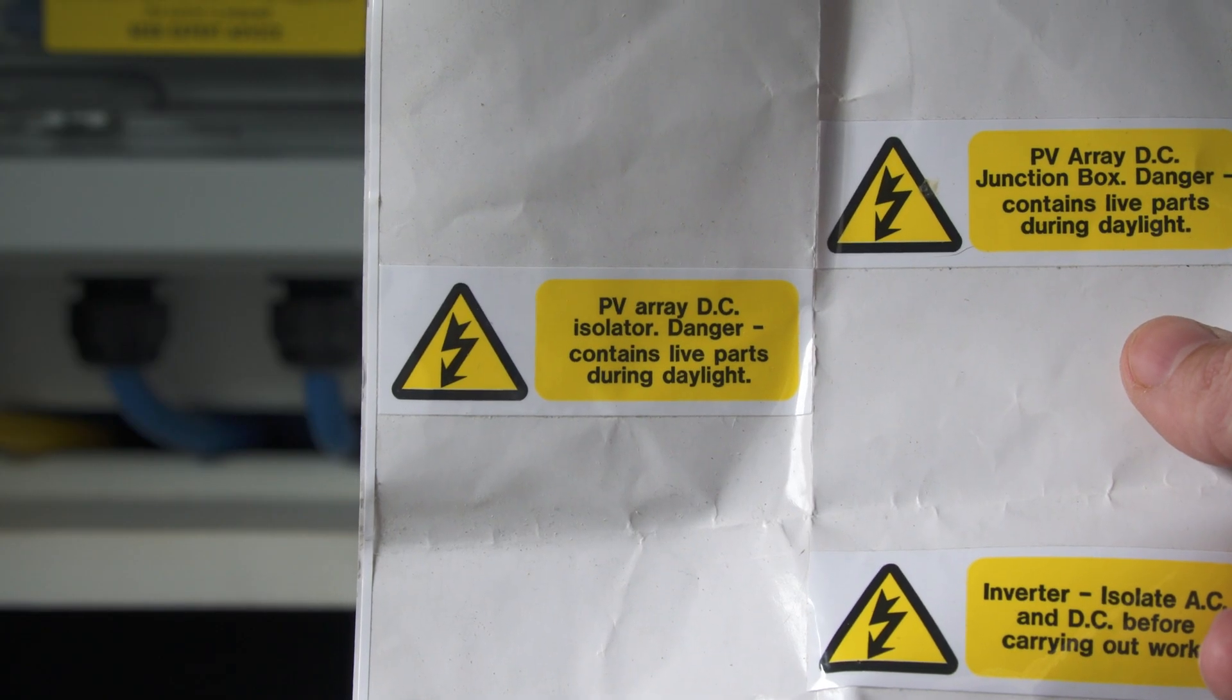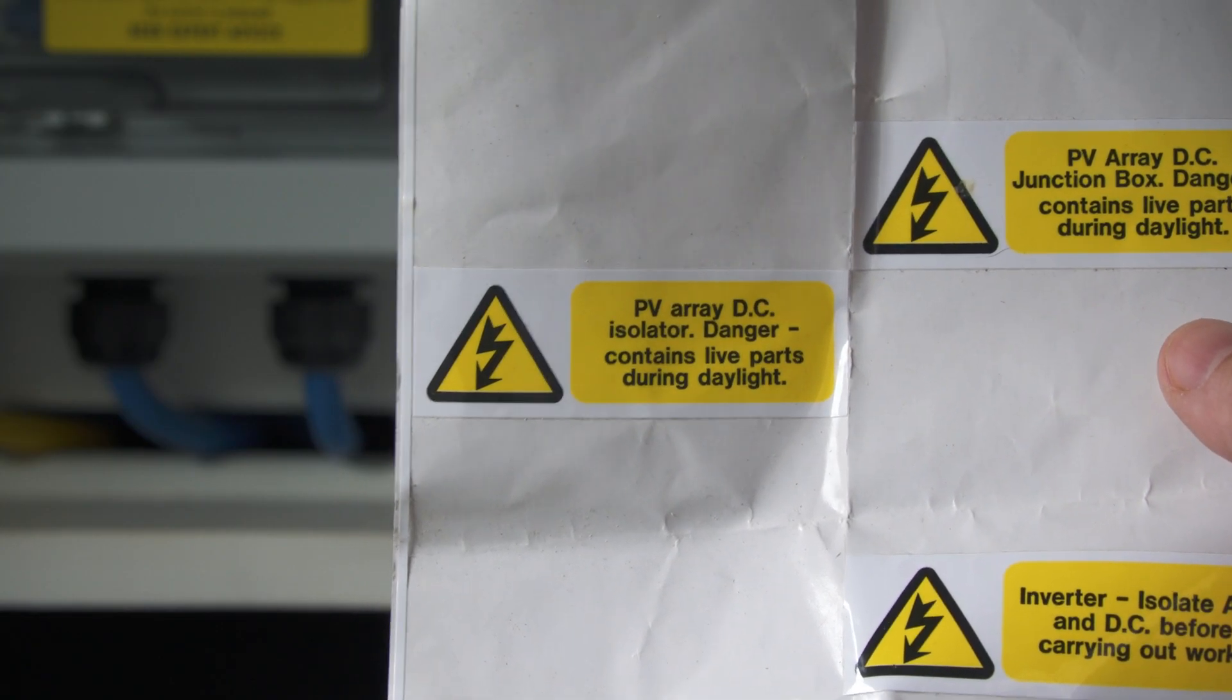The last thing I need to do for this kill switch is just add a little label at the bottom here. So this label just gives a warning that during daylight there's obviously sun hitting those solar panels and therefore the parts are live.